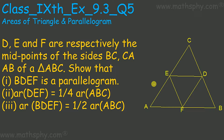In this problem, D, E, and F are respectively the midpoints of sides BC, CA, and AB of triangle ABC. We have triangle ABC where E is the midpoint of AC, D is the midpoint of BC, and F is the midpoint of AB.